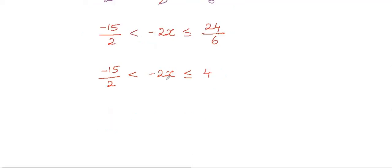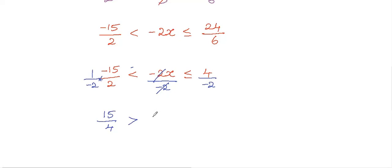Twenty-four over six simplifies to four. Now we need to cancel the minus two, so divide all sides by minus two. The minus two cancels in the middle, leaving X. On the left we get minus fifteen divided by minus four, which is fifteen over four. Since we're dividing by a negative number, the inequality signs flip: less than becomes greater than, and less than or equal to becomes greater than or equal to.